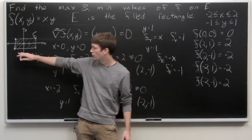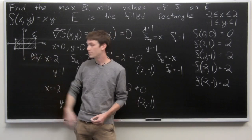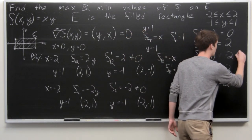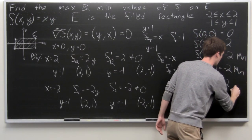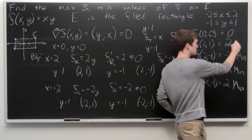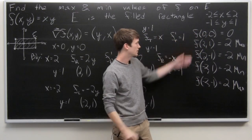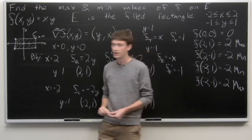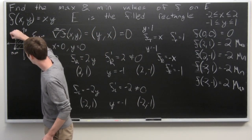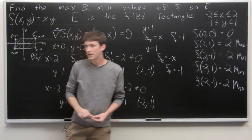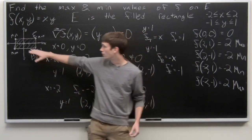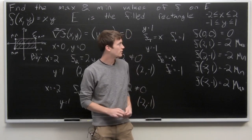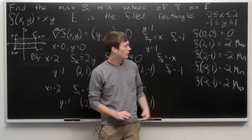All the points we need to check are now listed. Looking by inspection, we have two minimums and two maximums. The maximum occurs at (2,1) and again at (-2,-1). The minimums occur at (-2,1) and (2,-1). The origin is the only critical point that's not a max or min, where the function equals 0. So we have two global maximums and two global minimums on our compact region E.